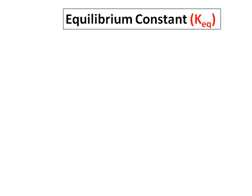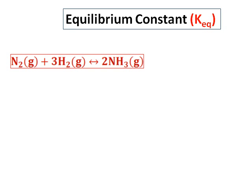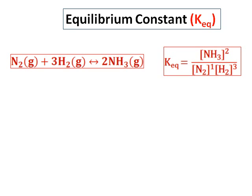Now we will do some examples on how to write the equilibrium constant for various equations. Consider the first equation: nitrogen plus hydrogen giving you 2 ammonia. This is the case when all the reactants and the product are gases, so all of them will appear in the equilibrium expression. K equals concentration of ammonia raised to the power of 2, divided by concentration of nitrogen raised to the power of 1, times concentration of hydrogen raised to the power of 3, because the rule is product over reactant raised to the power of the stoichiometry.